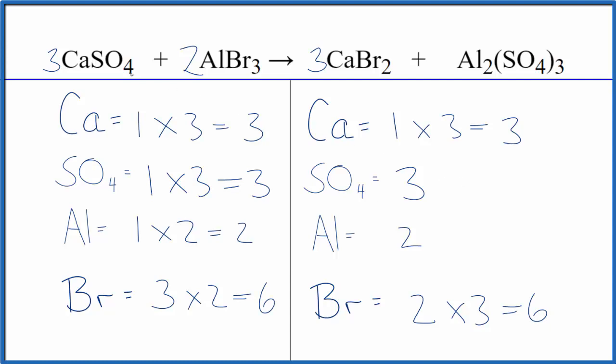This is Dr. B with the balanced equation for CaSO4 plus AlBr3, calcium sulfate plus aluminum bromide. Thanks for watching.